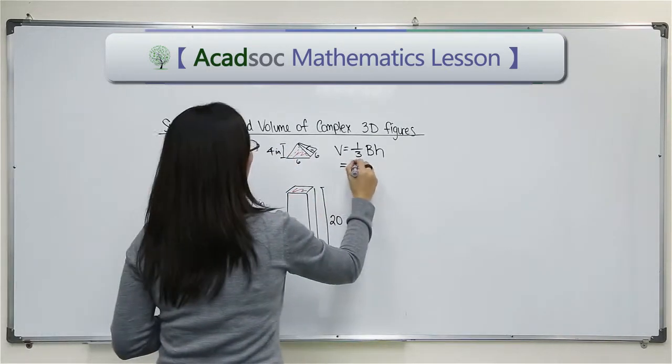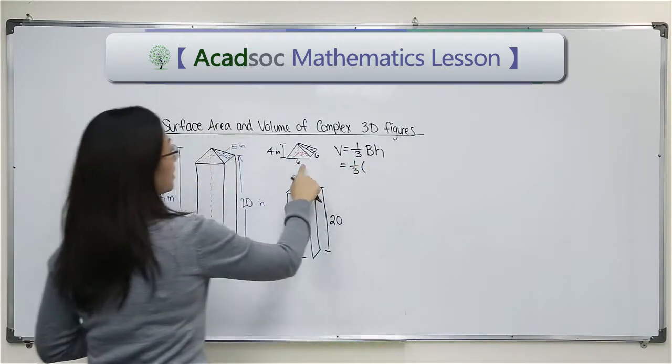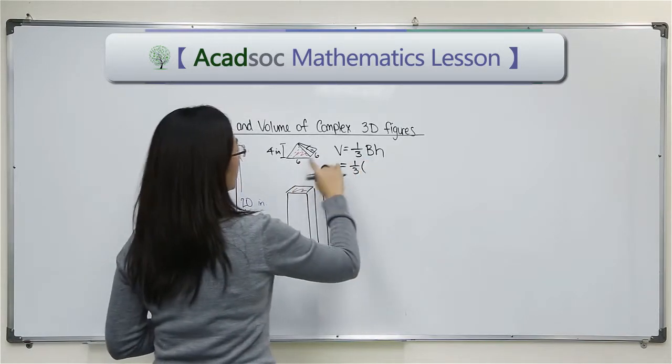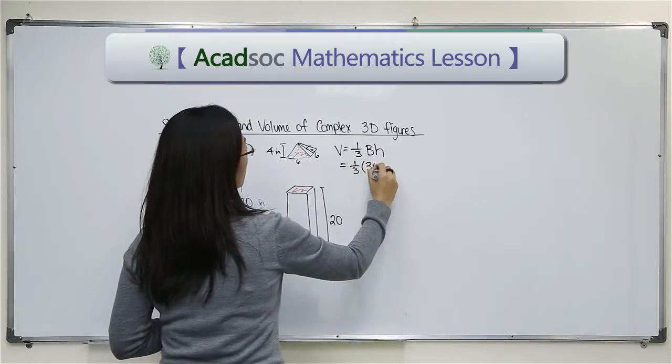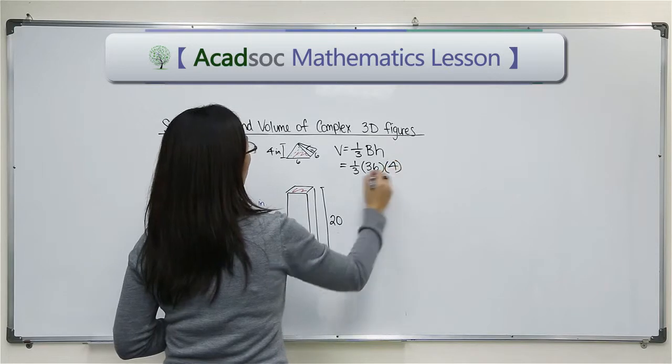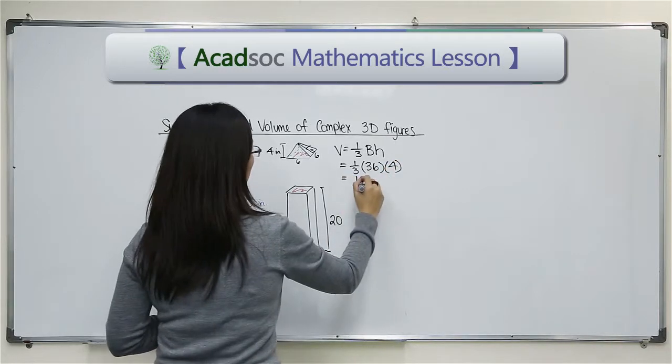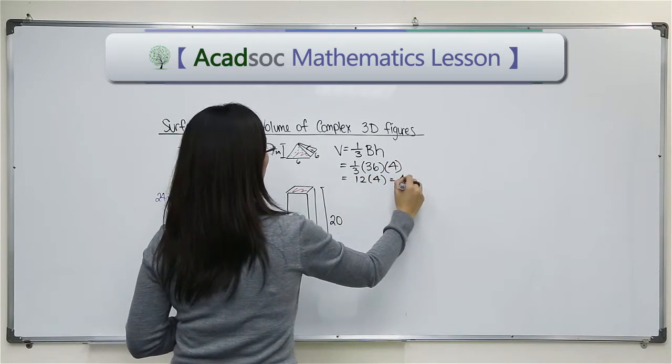Okay, so let's multiply this. I have one-third times the area of the base of this pyramid, which is 36 times 4, and that would be 12 times 4 which is 48. So that's the volume for the pyramid.